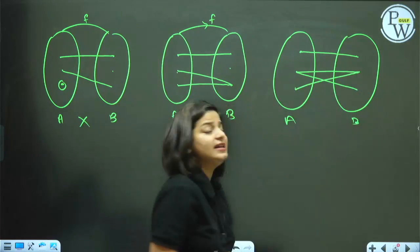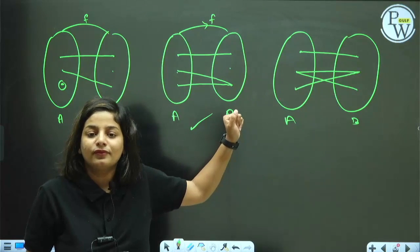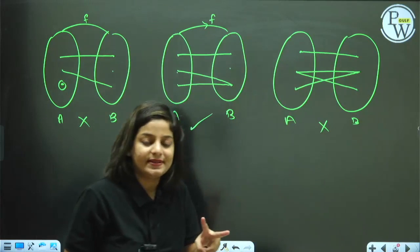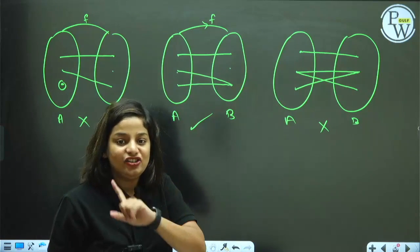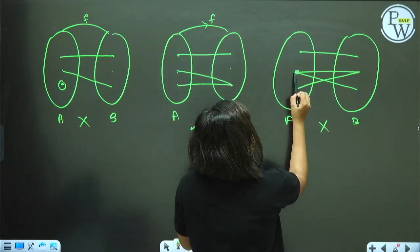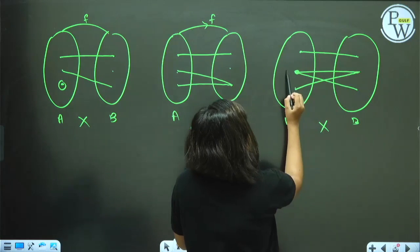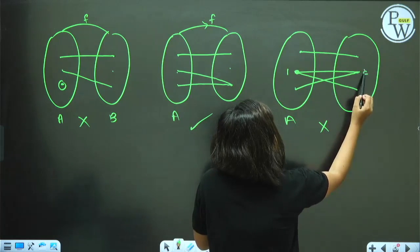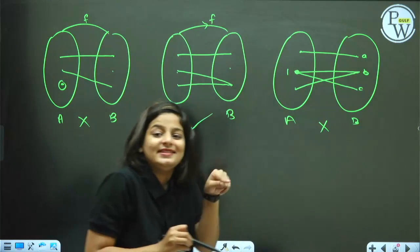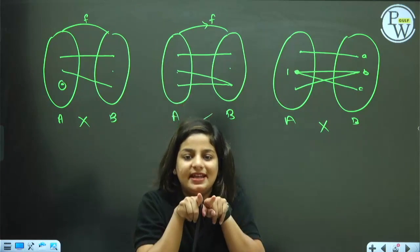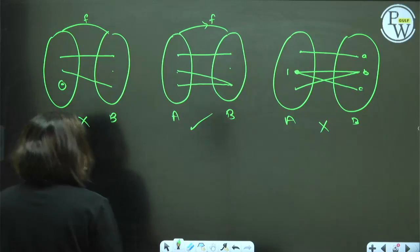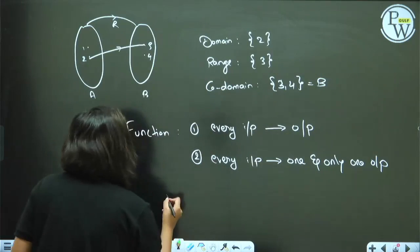Is this a function? No. What is the reason? The second condition is not satisfied. This particular input has two outputs — let's say input 1 has two outputs B and C. One has two outputs B and C — not possible. It's not a function.